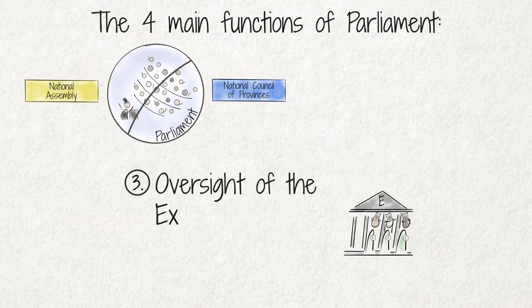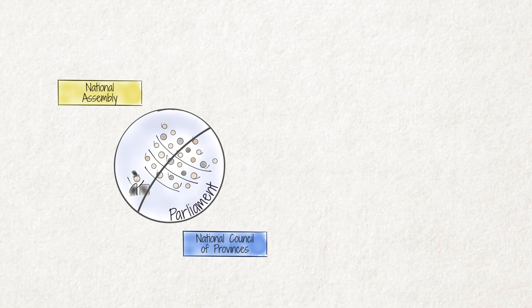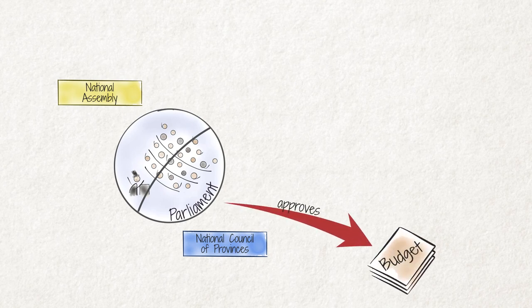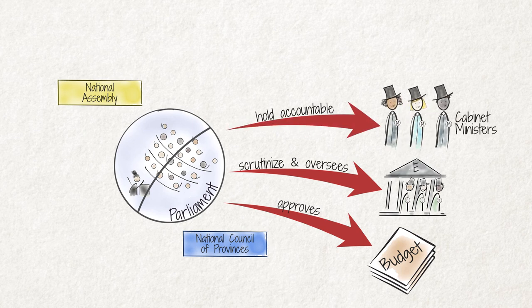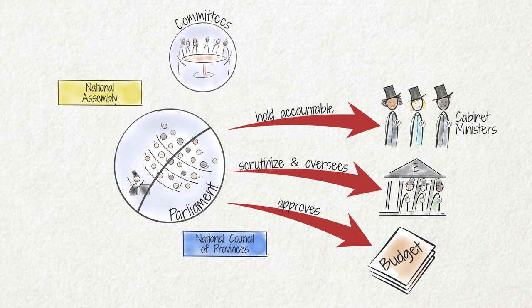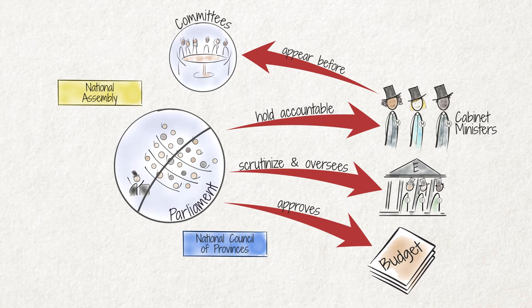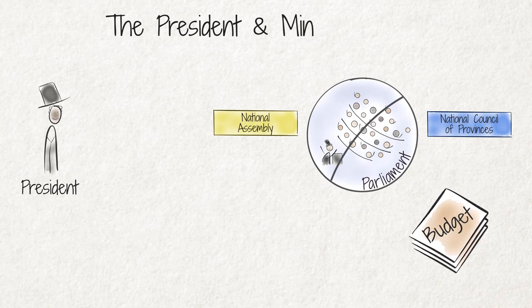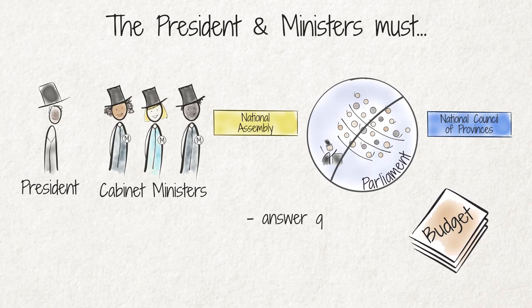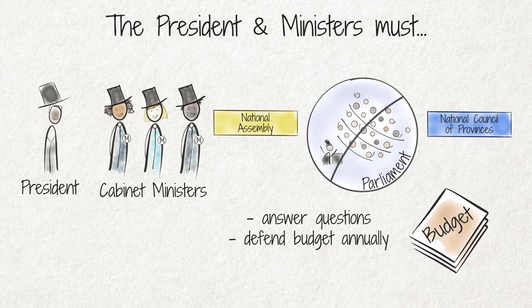The third function is oversight of the executive. Parliament approves the budgets of government departments and has the duty to scrutinise and oversee the work of the executive and to hold cabinet ministers accountable. The various committees of the National Assembly and the National Council of Provinces can call cabinet ministers to appear before them to explain and answer questions about their work, ensuring that members of cabinet do their job properly. The president and his or her cabinet are also required to answer questions in parliament and to defend their budget every year before the National Assembly.